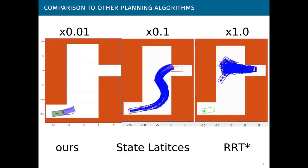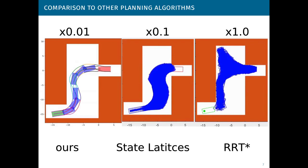In this experiment, we compare the planning time of our method with RRT star and state lattices. To visualize the planning times properly, we had to slow down our method 100 times.